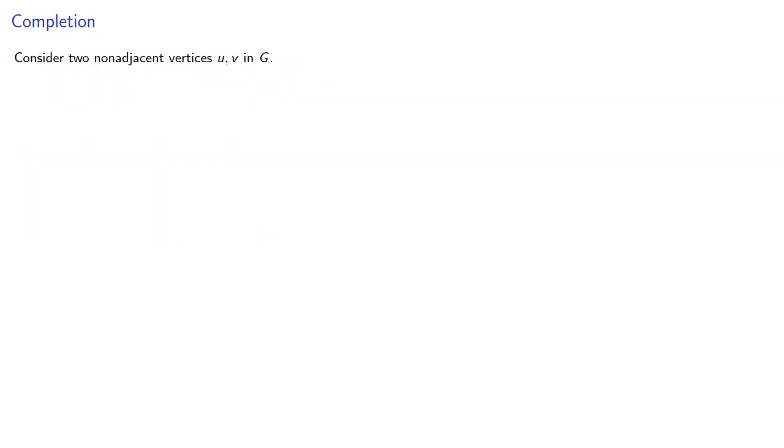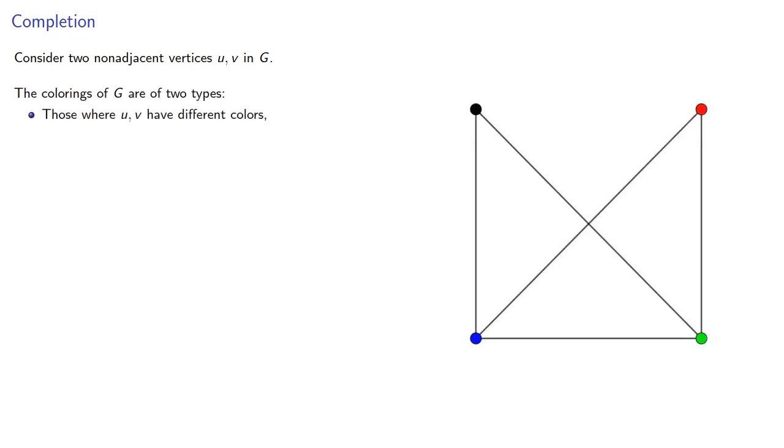Consider two non-adjacent vertices u and v in g. The colorings of g are of two types. Those where u and v have different colors, and those where u and v have the same color.